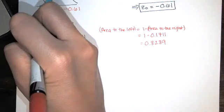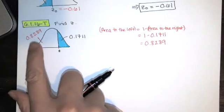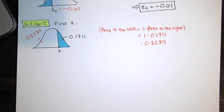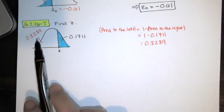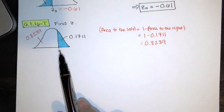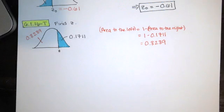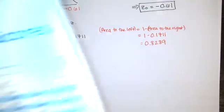Now, we're not done yet. We need to find this area of 0.8289 in our table. Now, since that area to the left is greater than 0.5, we know that this is a positive z-score. So I'm going to go to my table, and I'll look for positive z-scores.